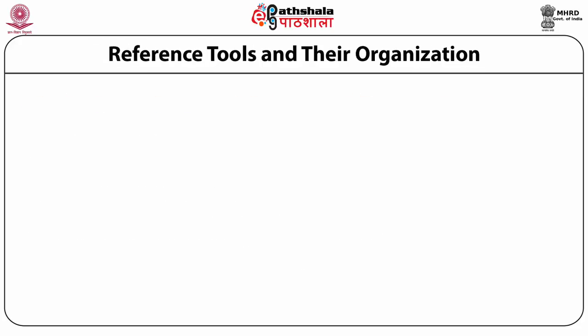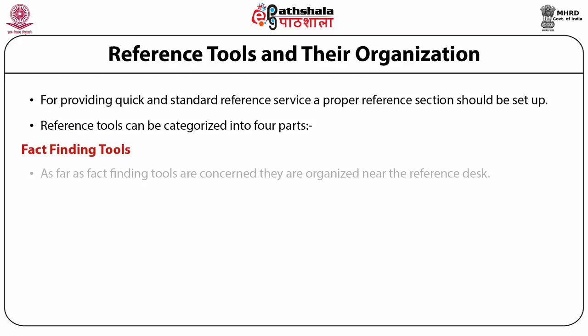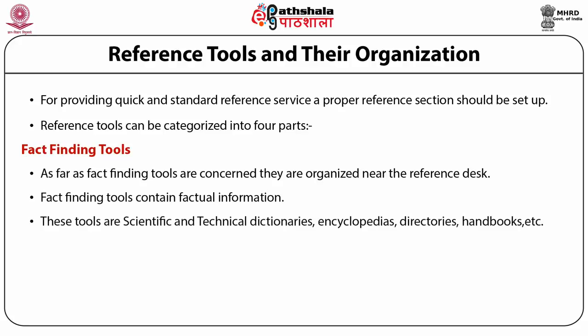Reference tools and their organization: for providing quick and standard reference surveys, a proper reference section should be set up. Reference tools can be categorized into four types. Number one, fact finding tools — these are organized near the reference desk, contain factual information, and include scientific and technical dictionaries, encyclopedias, directories, handbooks, etc. Number two, literature searching tools — these are very important in research and technical libraries and are arranged in a separate sequence in the reference section so that users and staff may access them immediately when required.